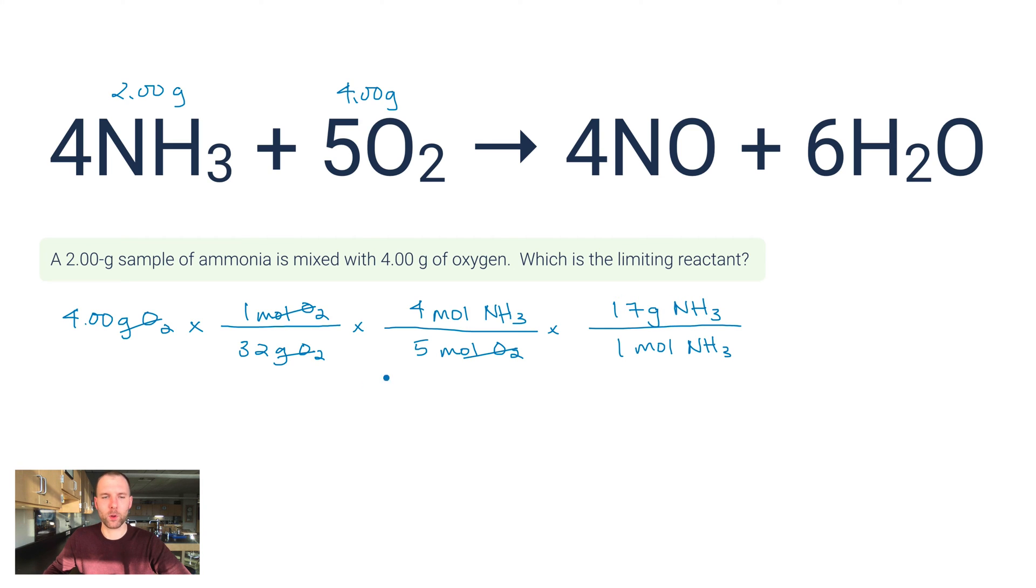The more precise molar masses you can use, the better your results will be. But to illustrate this, I don't need crazy specific molar masses. I'm ready to calculate. I've got 4 grams times 4 times 17 over 32 over 5. I'm skipping the ones because they don't change your math too much. What I end up with is 1.70 grams of NH3 is needed.